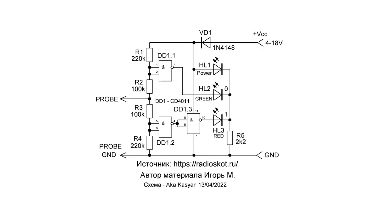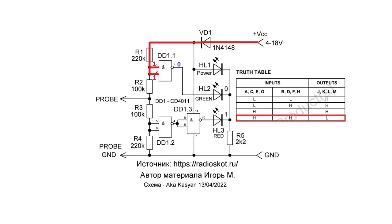The first case: there is no logical signal at the input. Resistor R1 provides a high level at the inputs of the first element. Therefore, the output is low and the green diode doesn't light up.